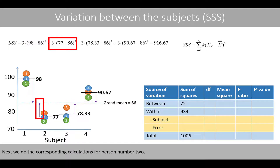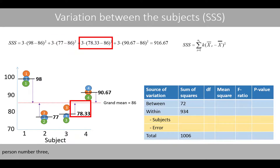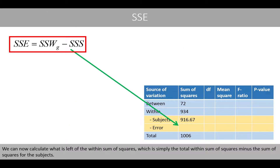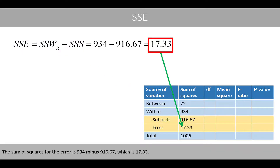Next, we do the corresponding calculations for person number two, person number three, and person number four. We see that the sum of squares for the subjects is about 916.67. This value represents the variation in weights between the four individuals. We can now calculate what is left of the within sum of squares, which is simply the total within sum of squares minus the sum of squares for the subjects. The sum of squares for the error is 934 minus 916.67, which is 17.33.